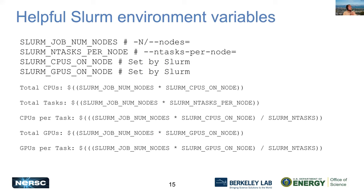Here are some helpful Slurm environment variables you may want to reference later. Slurm puts these into your environment and you can use them — commonly to do math calculations to figure out the total number of CPUs or tasks your program has, or the total number of GPUs per task. These can then be used in srun itself to make sure everything is set up properly when running your jobs.